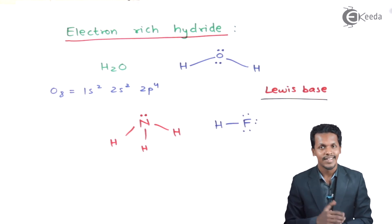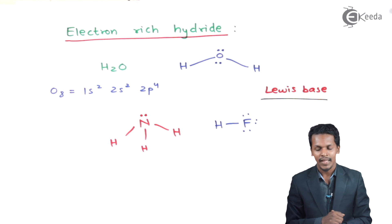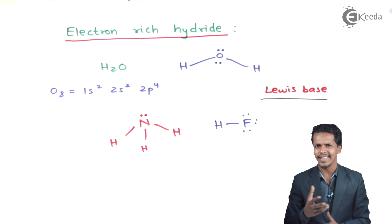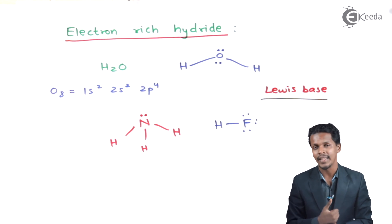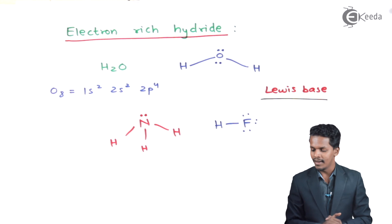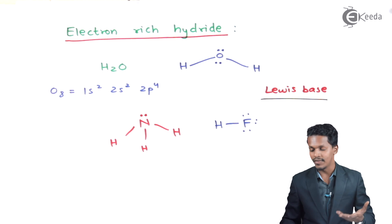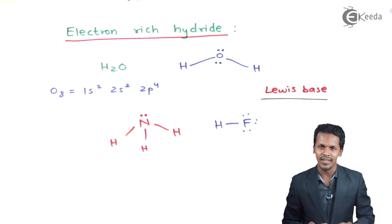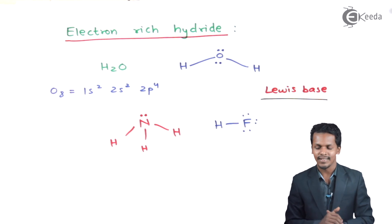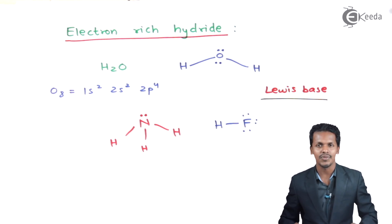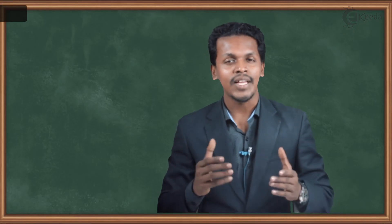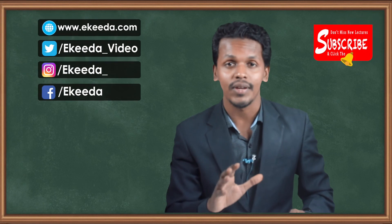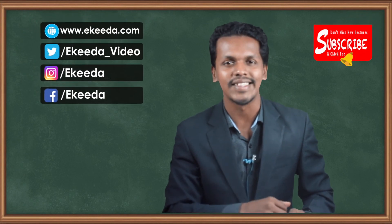This is what I wanted to cover about covalent hydrates. Since they are volatile in nature, they can conduct electricity under certain conditions. Regarding solubility, NH3 and HF are soluble in water — and since HF is very reactive, it produces vigorous reactions. These are some of the key properties of covalent or molecular hydrates.